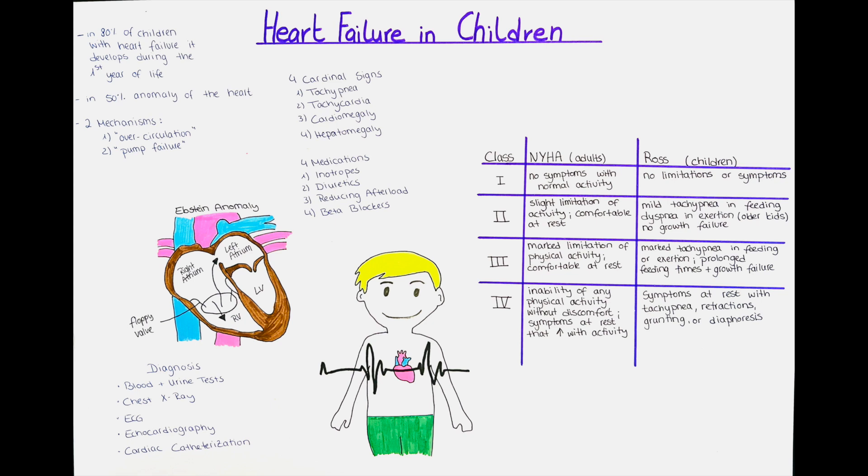On the poster you can also see the comparison of the clinical classification of heart failure in adults compared to children. How do we diagnose heart failure in a child? We can do different blood and urine tests. We can for example test for the B-type natriuretic peptide, which is often high in cases of heart failure. This protein is secreted by the heart to keep the blood pressure stable.